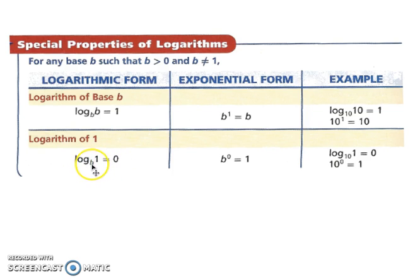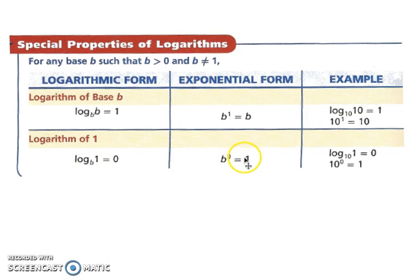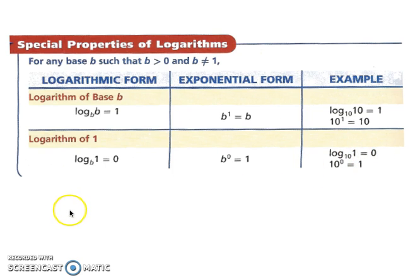Think of it this way: your base of your log to the 0 power — anything to the 0 power is 1. So as long as you end up with log base whatever of 1, it's going to equal 0.